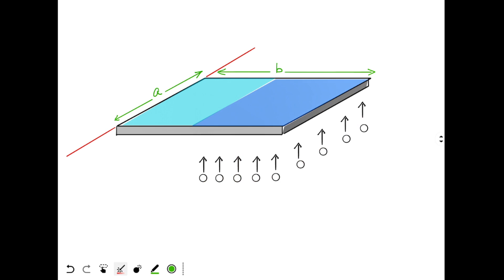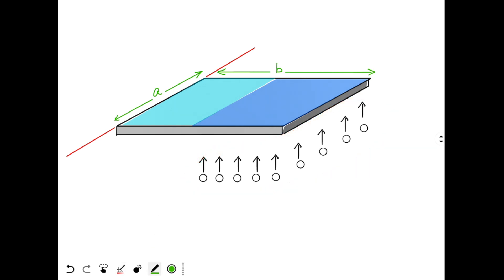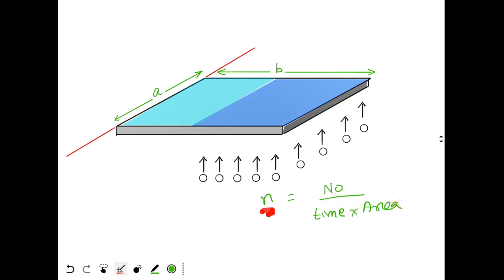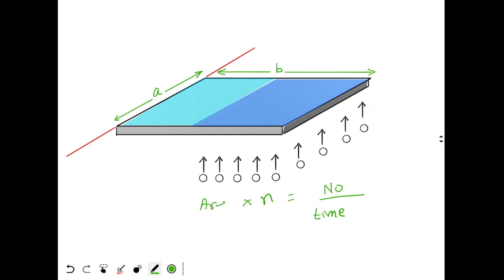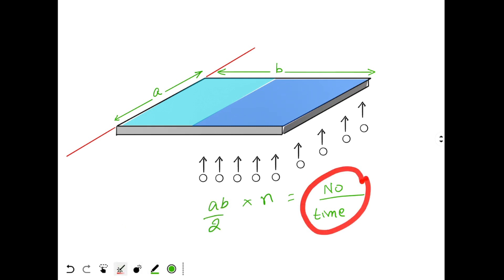We solve this question using torque. First, we need to find the total force applied by these balls. The number of balls striking per second per unit area is small n. To find the number of balls striking per second, we multiply n by the area of the shaded region. The shaded region has width A and length B/2, so the area is AB/2. This gives us the number of balls striking per second.